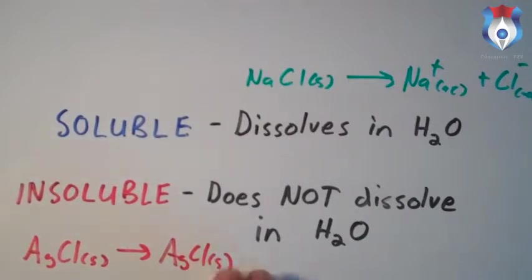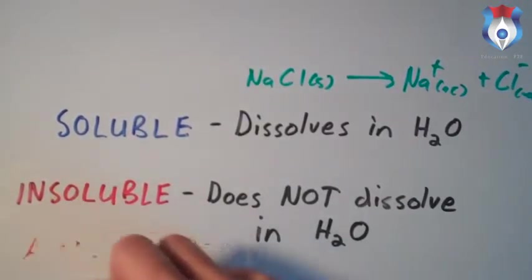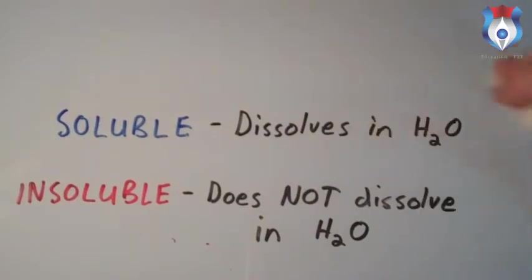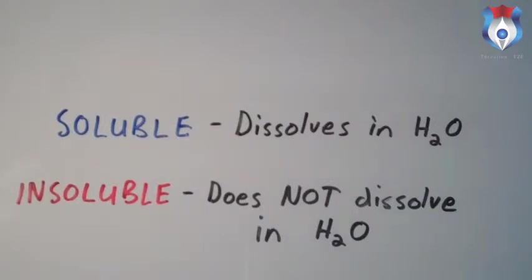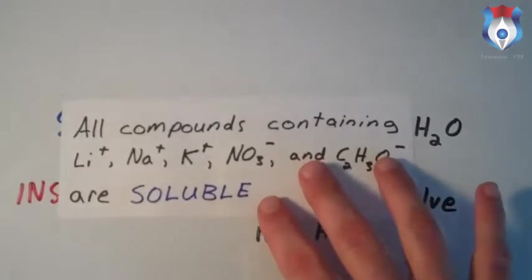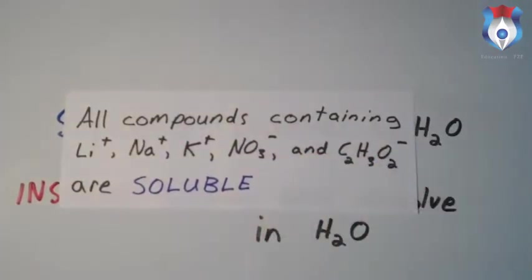Now we'll discuss rules for determining whether an ionic compound is soluble. First: all compounds containing lithium ion, sodium ion, potassium ion, nitrate ion, and acetate ion are all soluble. This is the easiest rule because there are no exceptions.